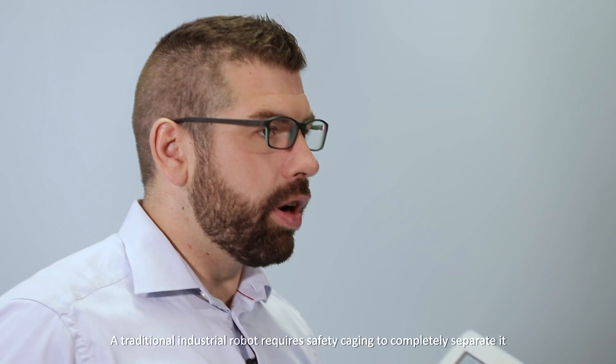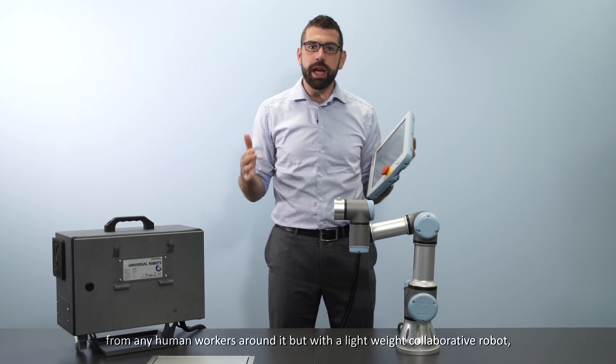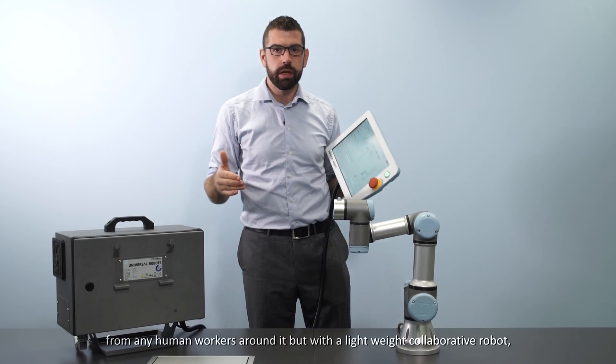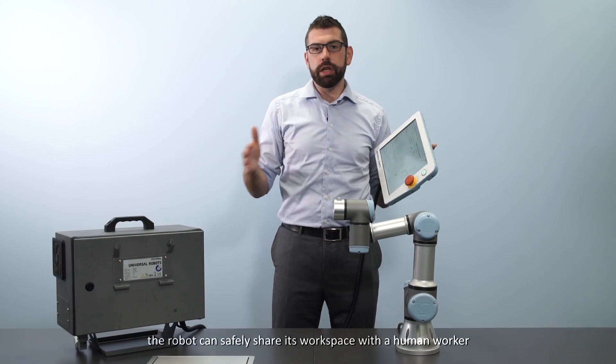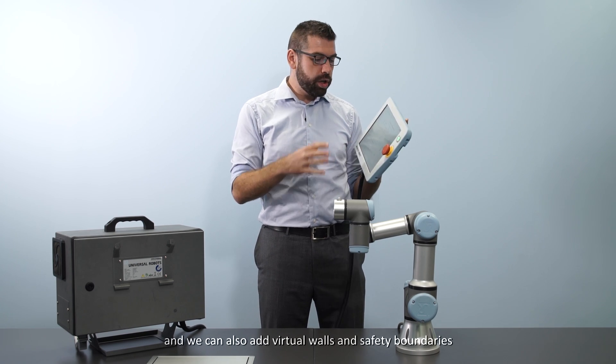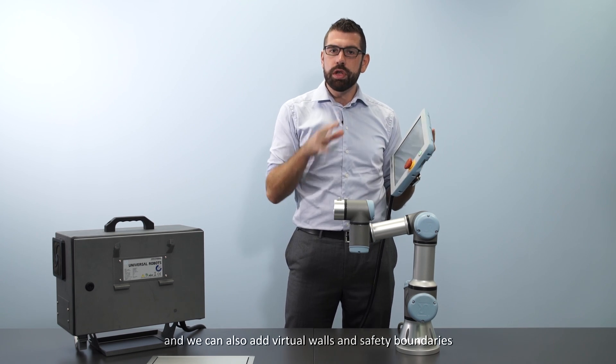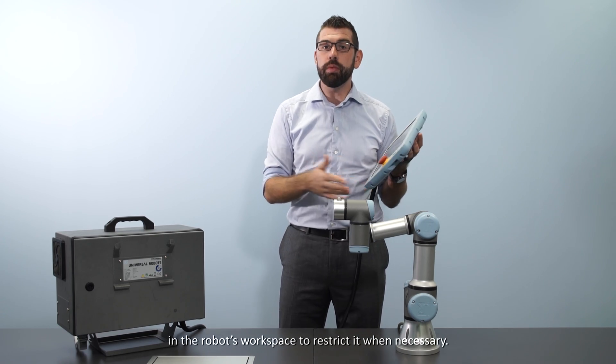A traditional industrial robot requires safety caging to completely separate it from any human workers around it. But with a lightweight collaborative robot, the robot can safely share its workspace with a human worker. And we can also add virtual walls and safety boundaries in the robot's workspace to restrict it where necessary.